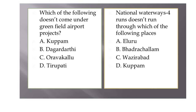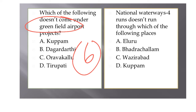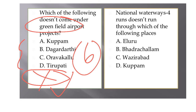Which airport does not come under greenfield airports? Greenfield airports are built from scratch — from land acquisition to infrastructure development. Currently six operational airports exist in AP: domestic airports at Rajamahendravaram, Kadapa, Ongole at Kurnool, and Puttaparthi; and international airports at Visakhapatnam, Vijayawada, and Tirupati. Since Tirupati is already operational, it is not a greenfield airport and is the correct answer. The five major greenfield projects being initiated are Kuppam, Dagarthi, Ongole, Ongole, and Tadepalligudem.